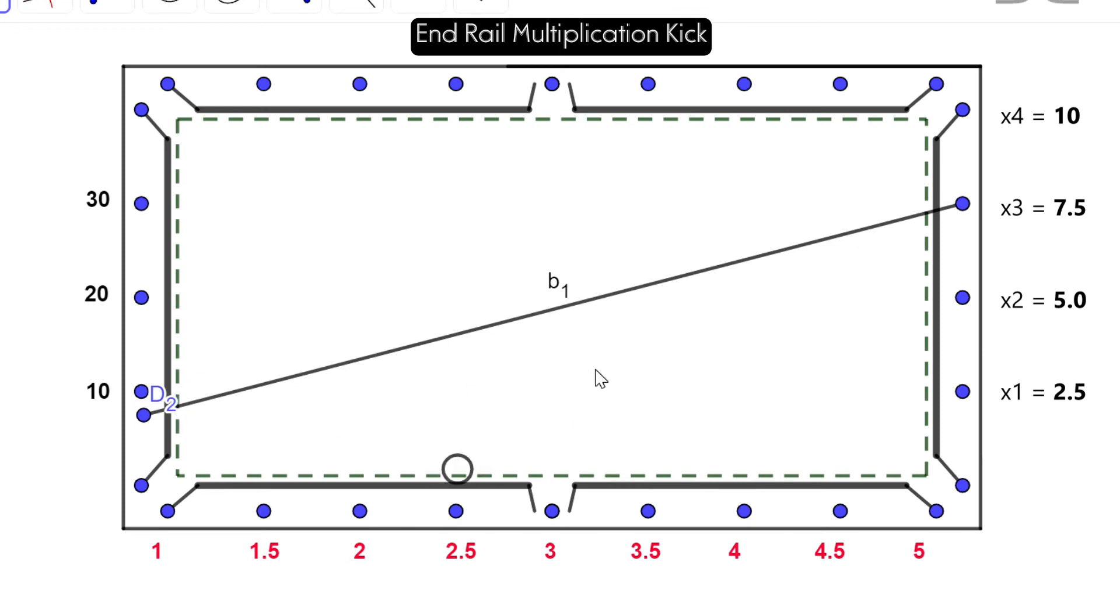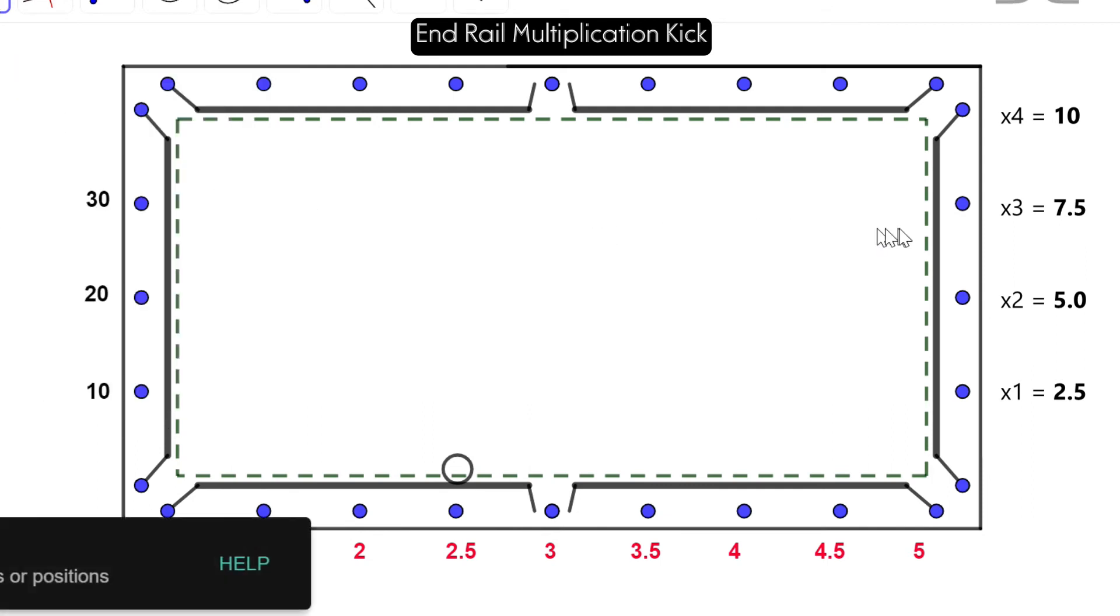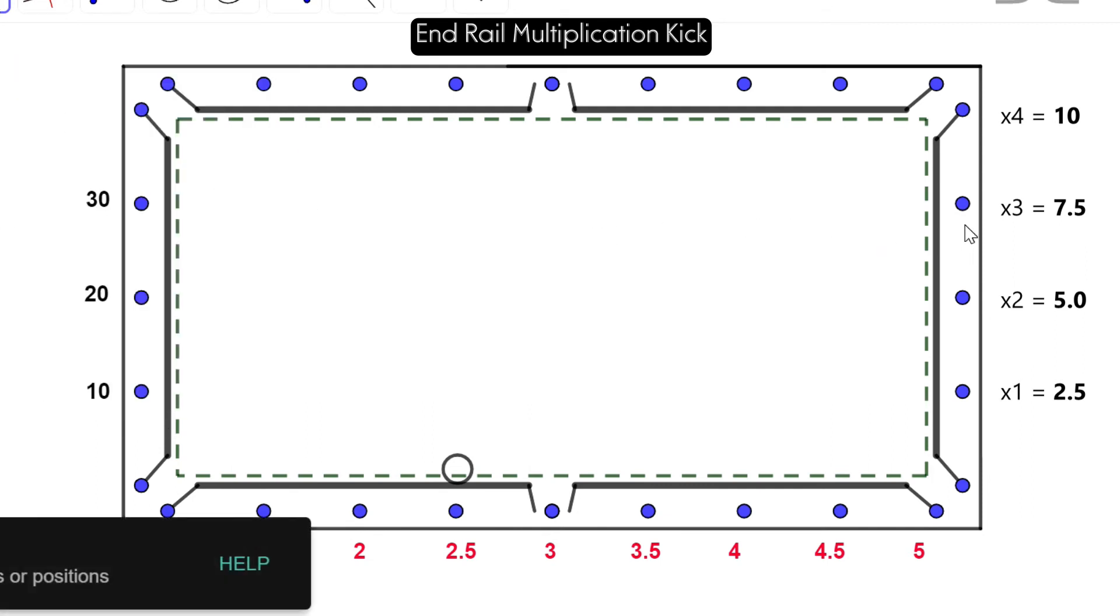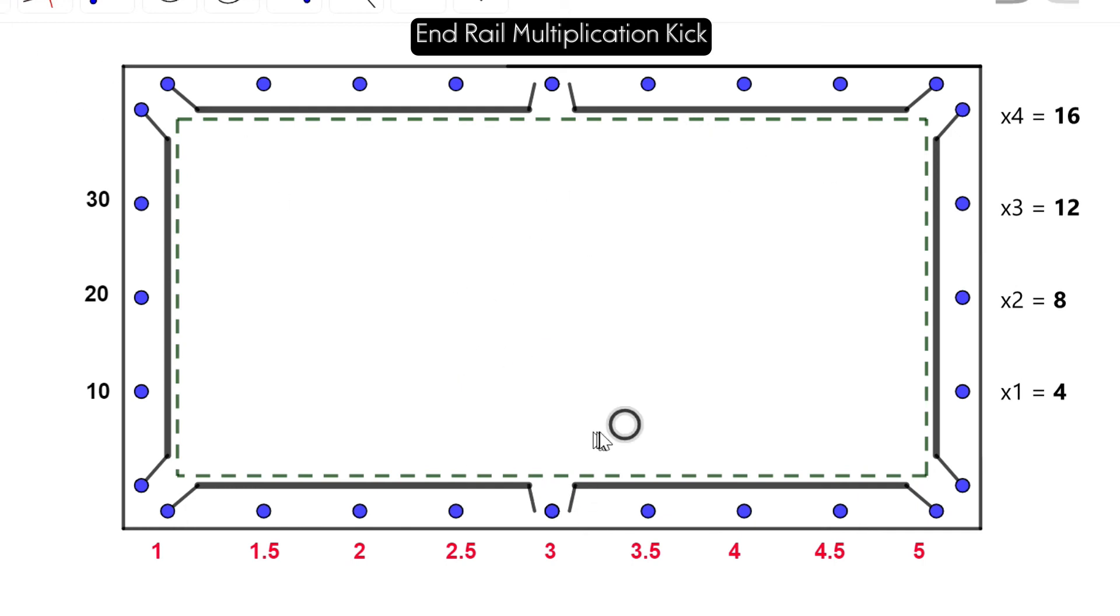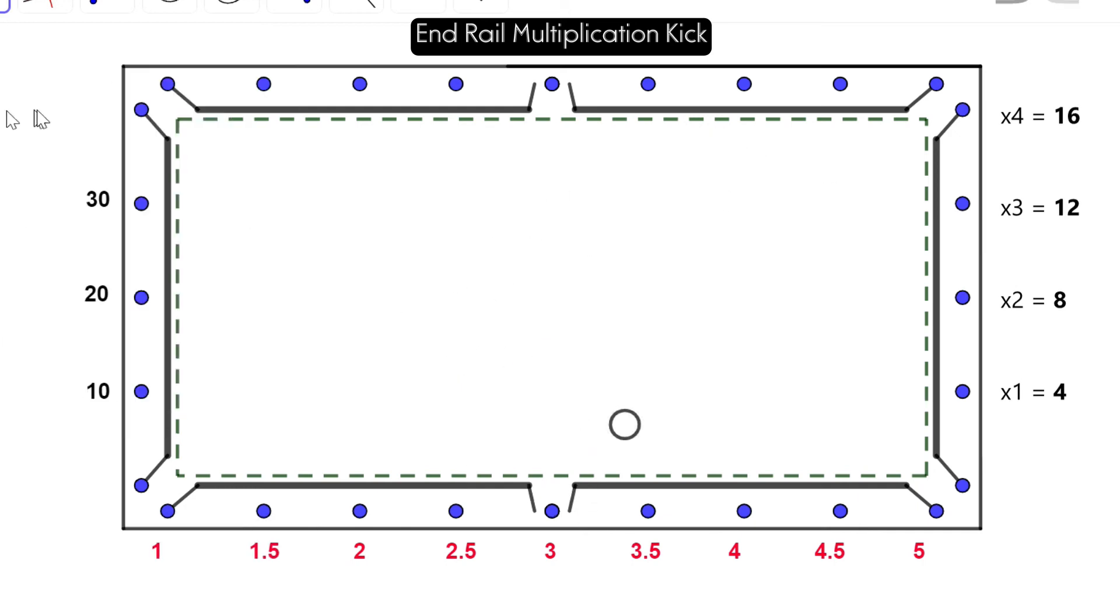Now let's imagine for a second you were not on that spot. Let's say you were here, so let's say you're at not diamond 3 but you were kind of aiming from diamond 2. This is 2.75, so now we have to do 2.75 times 2.5. Anybody? 2.75 times 2.5? Anybody do that in your head? Yeah, I can't either.